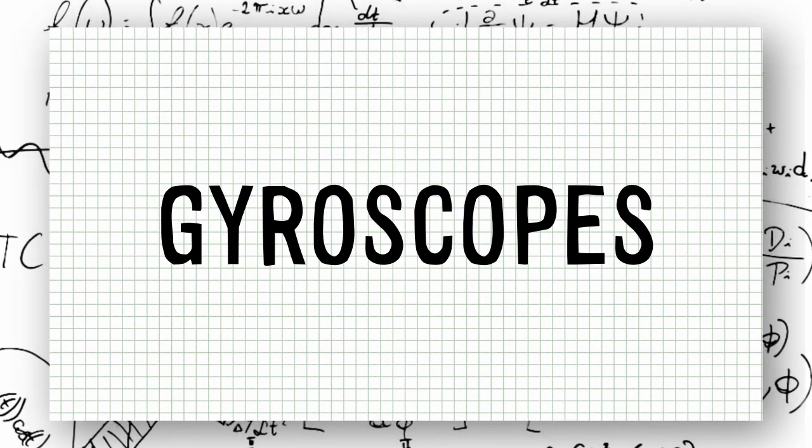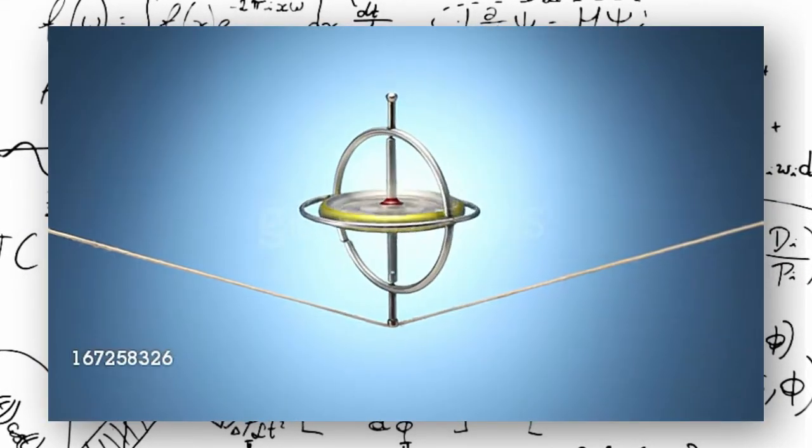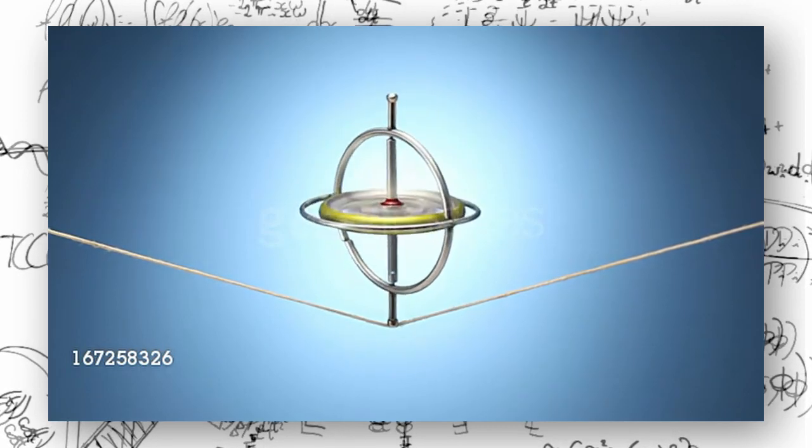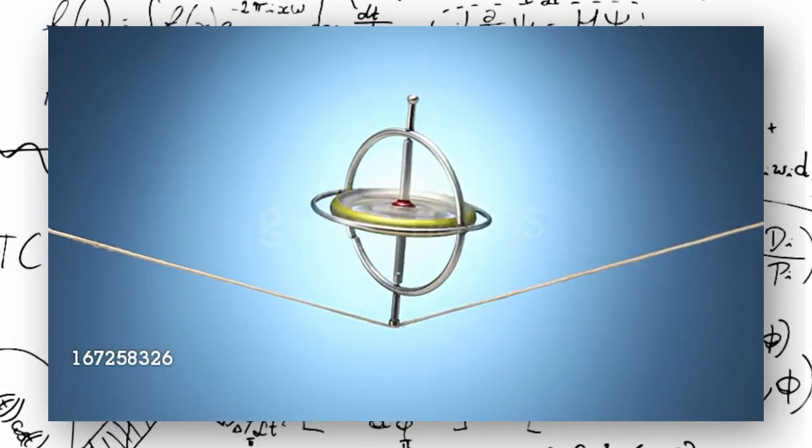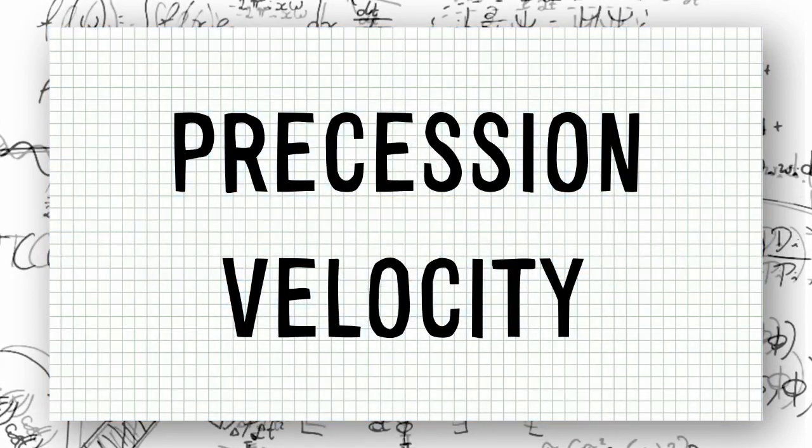You've probably heard of gyroscopes, which are rotating wheels or discs in which the axis of rotation is free to take whatever orientation it wants, and the axis of spin precesses with a different velocity called the precession velocity.